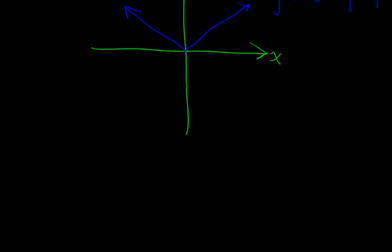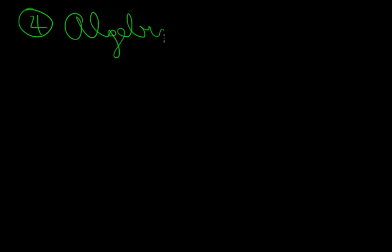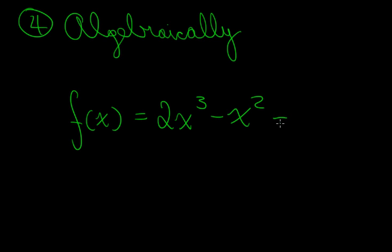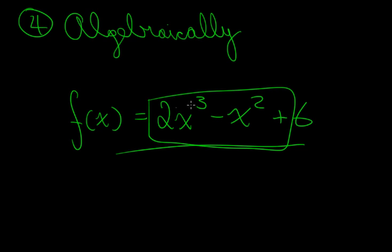Our fourth and final way to represent a function is algebraically with an explicit formula. For example, f of x is equal to 2x cubed minus x squared plus 6. This is a perfectly good representation of a function — you are giving the explicit formula for f of x.